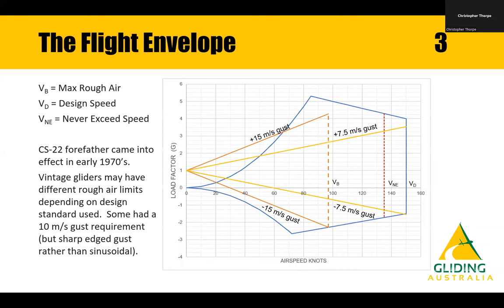The next part is where things get a little pear-shaped and where a lot of people don't necessarily understand very well — this is where gust loads come in. CS22 defines that the sailplane must be able to handle a plus and minus 15 metres per second gust up to max rough air speed. It doesn't define what max rough air is, but it gives you the set of equations needed to determine the slope of the gust line. Where the minus 15 m/s gust touches the negative g limit, you get VB, which is your max rough air speed.